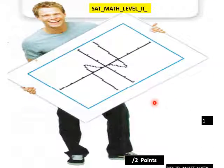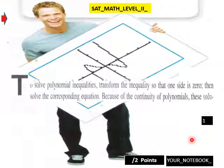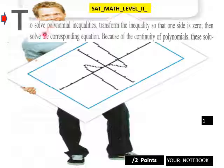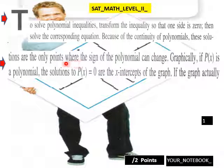And we go right into our first notebook entry. To solve polynomial inequalities, transform the inequality so that one side is zero, then solve the corresponding equation. Because of the continuity of polynomials, these solutions are the only points where the sign of the polynomial can change. Graphically, if P(x) is a polynomial, the solutions to P(x) = 0 are the x-intercepts of the graph.